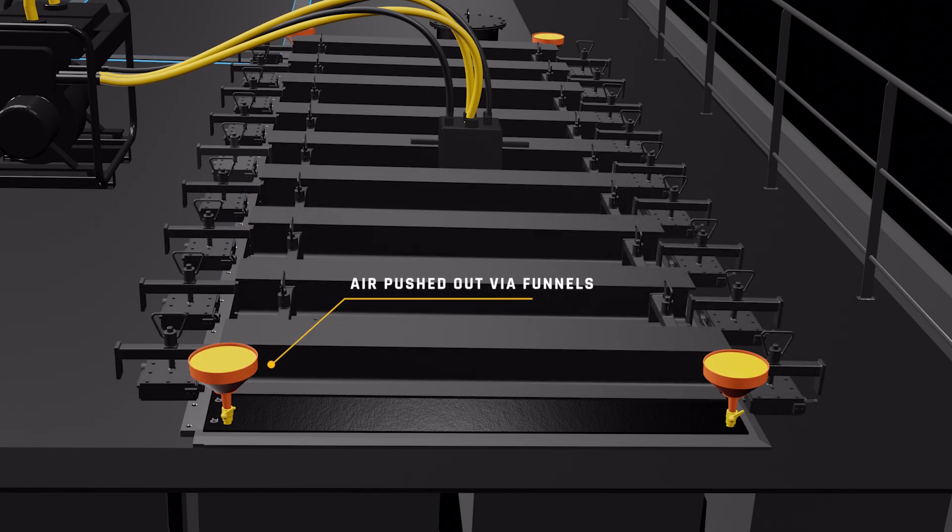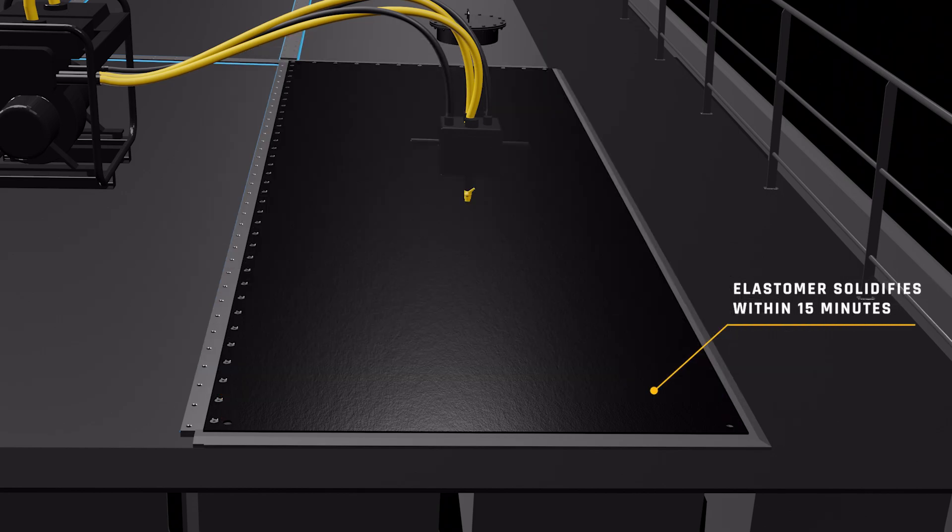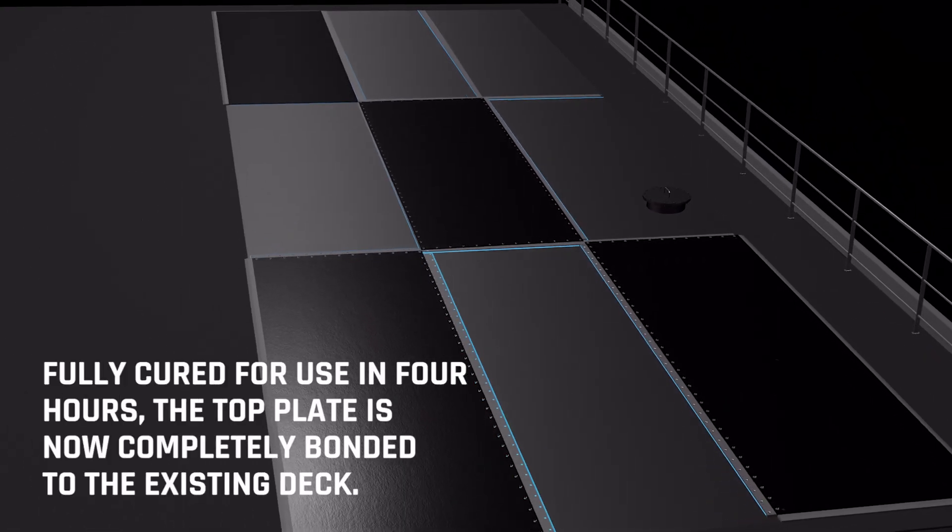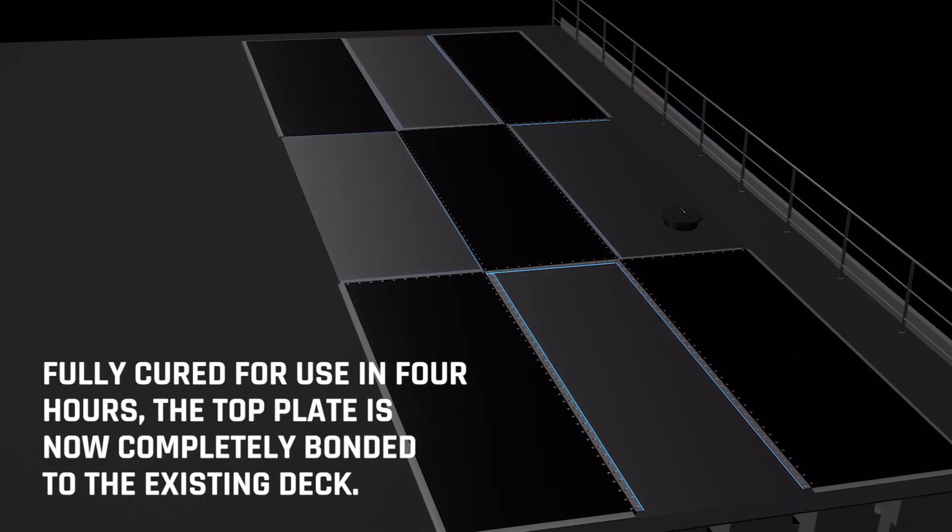All air is pushed out through the ventilation ports and funnels, ensuring there are no voids in the cavity. The engineered elastomer core material solidifies within 15 minutes and fully bonds the new top plate to the existing deck. The composite bond is complete after four hours.